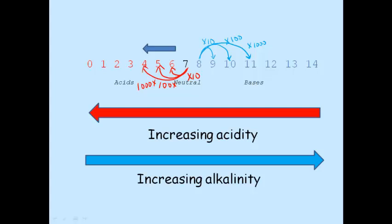So, to summarize, the lower the number, the more acidic. The higher the number, the more basic.